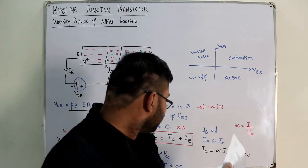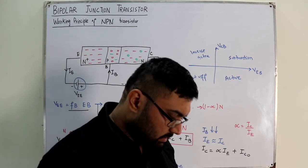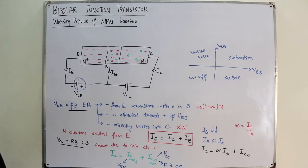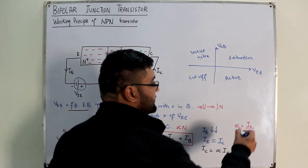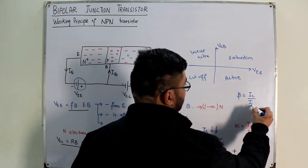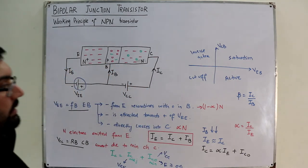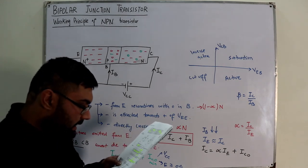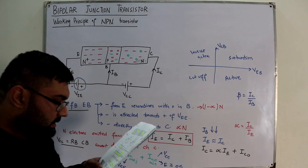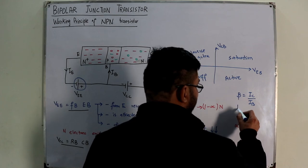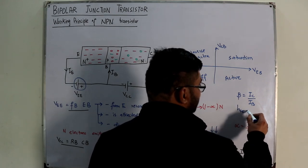From the Thomas L. Floyd book, β = IC / IB is the DC current gain. Typical values and the hybrid parameter hFE will be studied when we cover hybrid parameters in upcoming chapters or in Electronics 2.